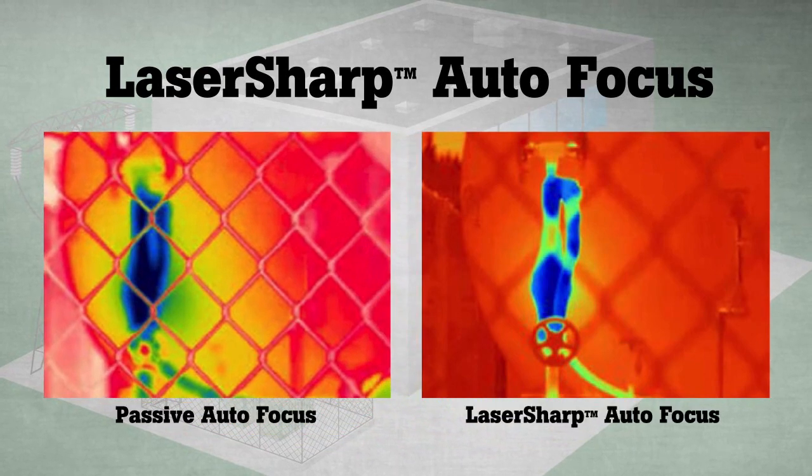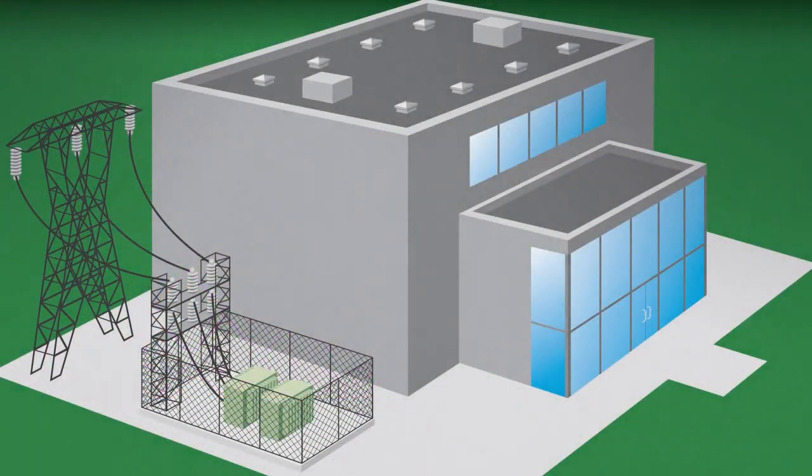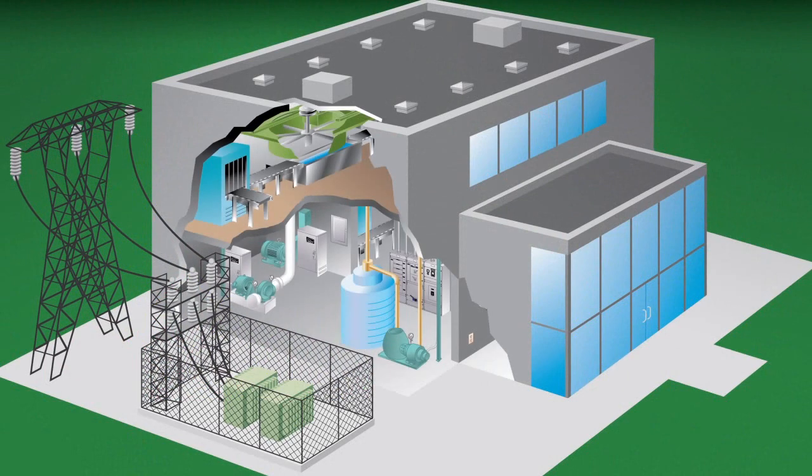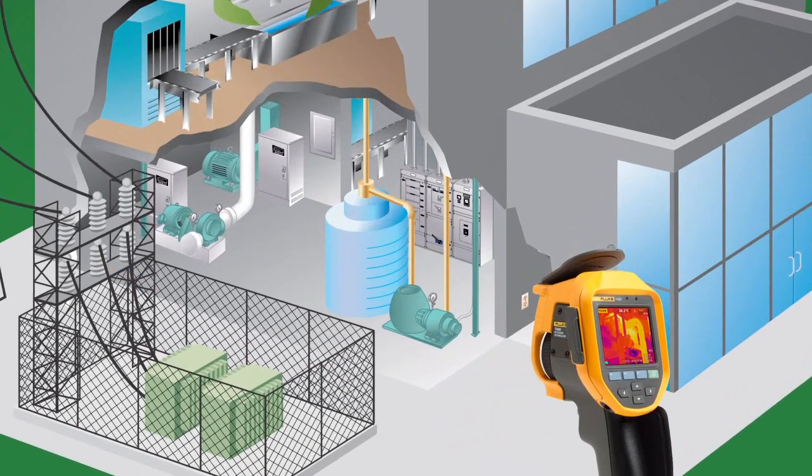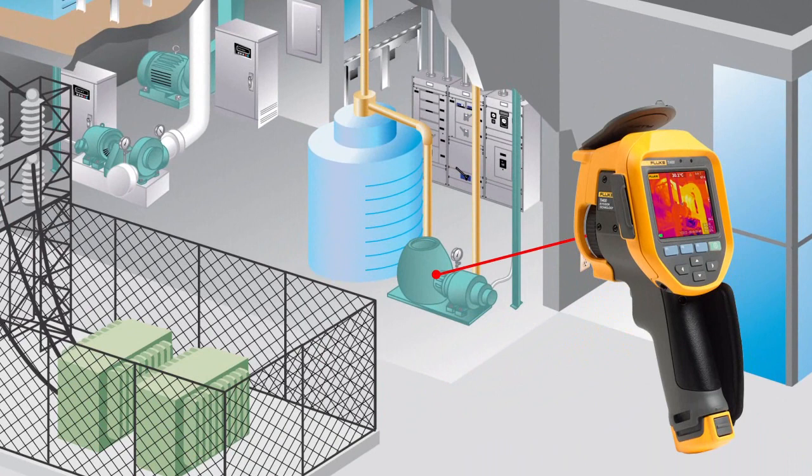Announcing a more intelligent autofocus system: LaserSharp autofocus, available only from Fluke. LaserSharp autofocus tells you exactly where you are focusing. It uses a laser to calculate the distance before it focuses.